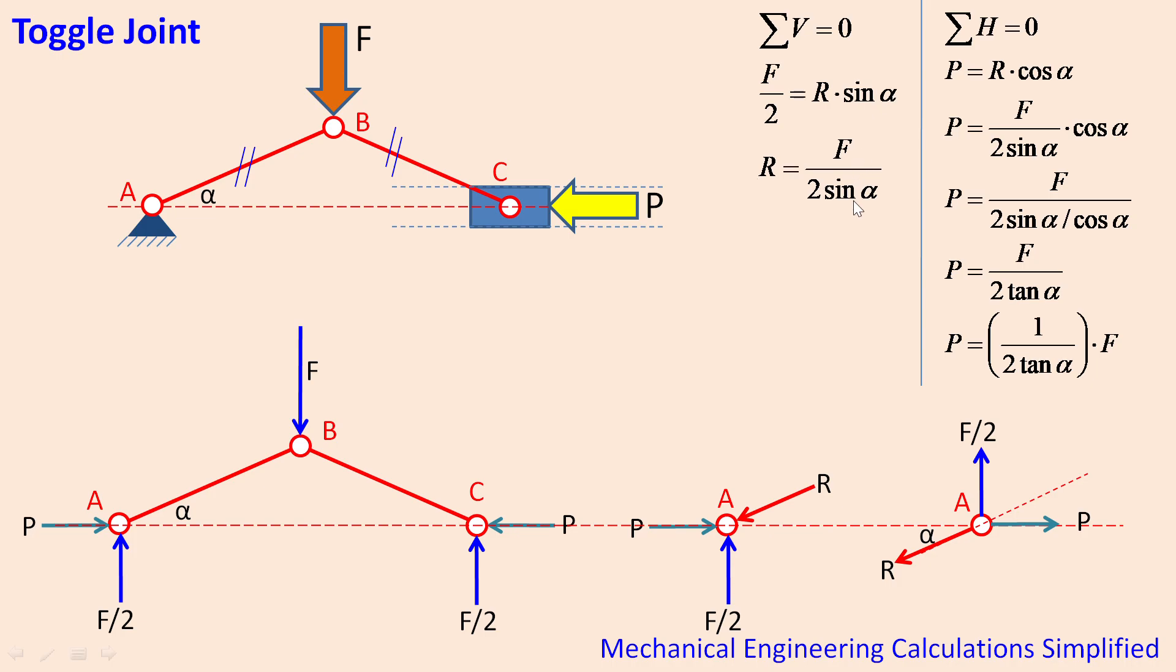So in this way we find R is equal to F divided by 2 sin alpha. Now I put this particular value of R in this equation then I get a formula like P is equal to F divided by 2 sin alpha divided by cos alpha. Now sin alpha by cos alpha is tan alpha, so P is equal to F divided by 2 tan alpha.